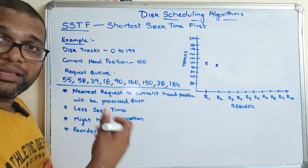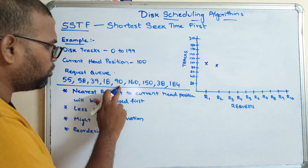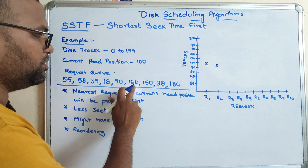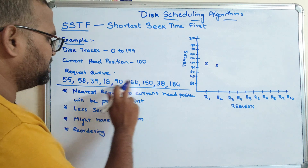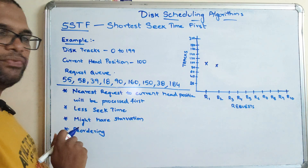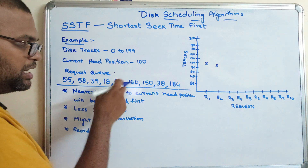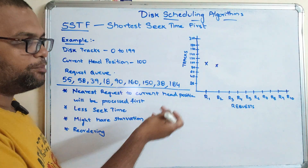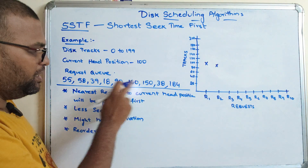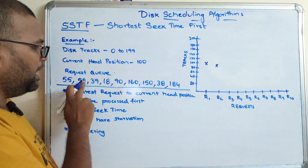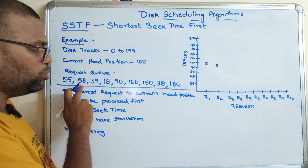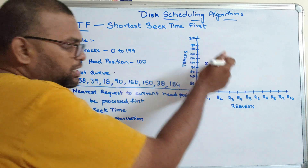The third request will be the one closest to 90. Comparing: 90 minus 150 is about 60, and 90 minus 58 is about 32. So 58 is closer. The current head position is at 90; the nearest track is 58, with a difference of 32 positions versus 60 for 150. So the next request is 58.